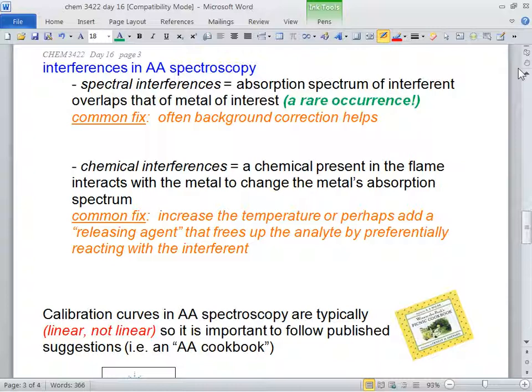Interferences. Spectral interferences. This is rare. You're studying for calcium. You know that absorbs at 550.25 nanometers. You have the calcium lamp put in there. But there's something else in the sample that also absorbs at that line. So there's two metals that have the exact same absorbance. It's rare though. The fix is this background correction button that you can push. That doesn't happen very often.